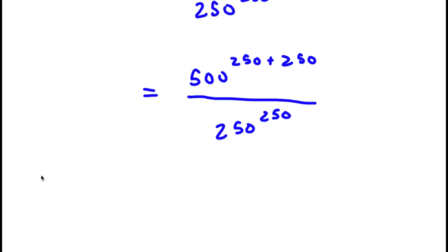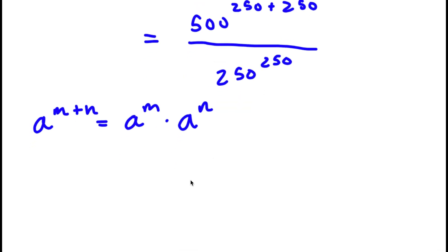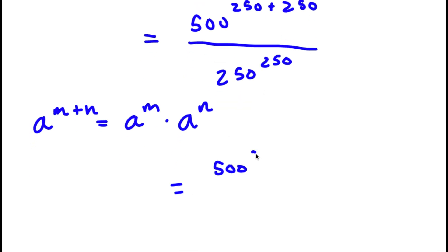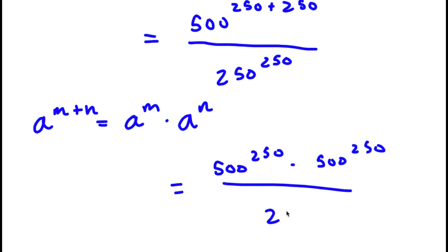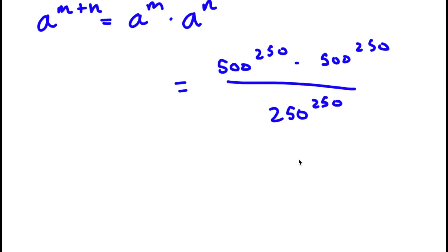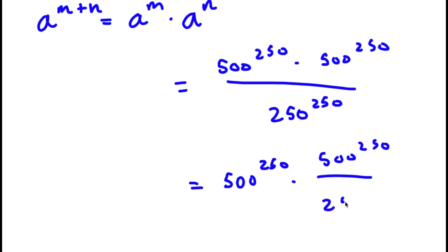If I have something in the form a to the power of m plus n, this is simply equal to a to the power of m times a to the power of n. So in this case, 500 to the power of 250 plus 250 is equal to 500 to the power of 250 times 500 to the power of 250, all over 250 to the power of 250.